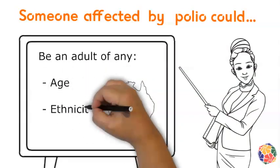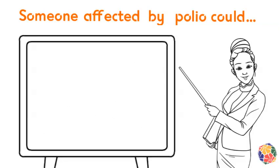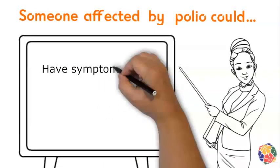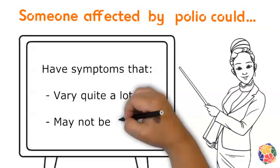Even an experienced doctor could not identify if a person was exposed to polio just by looking at them. This is because the symptoms experienced by those who have post-polio conditions are quite variable, and some symptoms are visible and some are not.